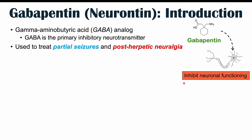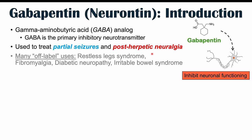Gabapentin is used to treat partial seizures and post-herpetic neuralgia. That's what it's marketed to treat, but it has many off-label uses as well, including treatment for restless leg syndrome, fibromyalgia, diabetic neuropathy, and irritable bowel syndrome.